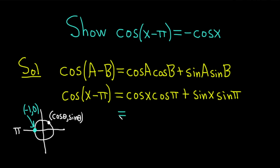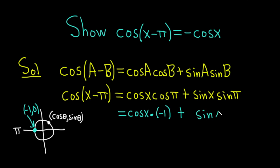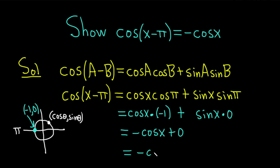Now we can continue. This is equal to cosine of x times cosine of pi — well, cosine of pi is the x-coordinate at pi, that's just negative one — plus sine of x times sine of pi — that's the y-coordinate at pi, which is zero. So this equals negative one times cosine x, which is negative cosine x, plus zero times sine x, which is just zero. This is equal to negative cosine x.